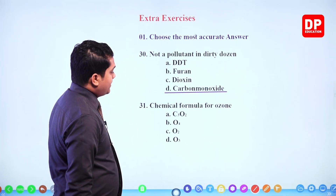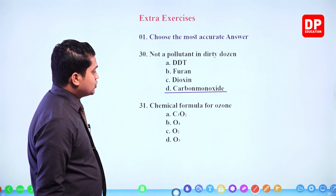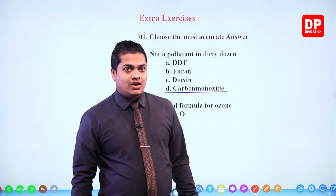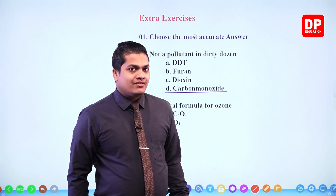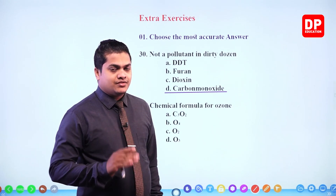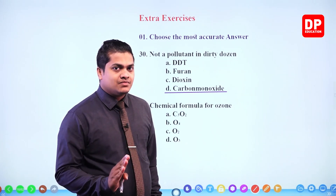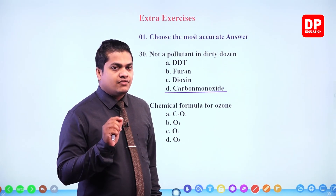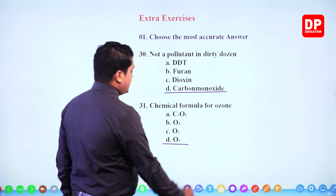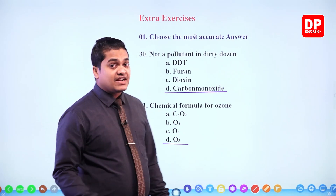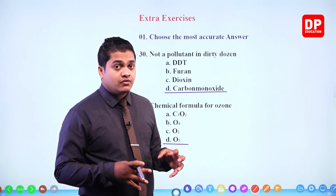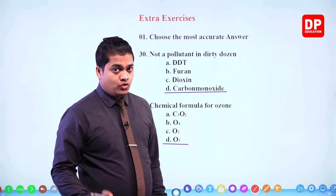Next: chemical formula for ozone — very simple. Ozone is a trimeric molecule of oxygen, meaning three oxygen atoms bonded together. So the chemical formula for ozone is O₃, not O₂. O₂ is oxygen gas, the gas that we respire. The answer is O₃.